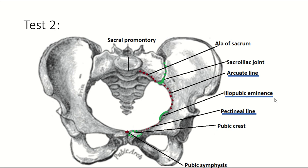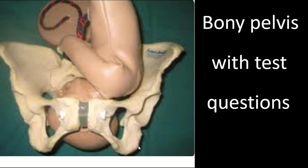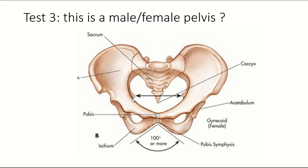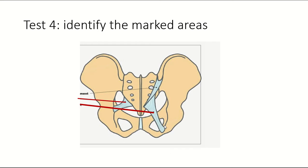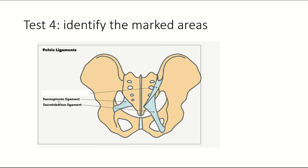Identify the marked areas: the arcuate line, iliopubic eminence, and pectineal line. In the female pelvis, note the wider subpubic angle, roomier pelvic cavity, and shorter, wider sacrum. Identify the two ligaments: the sacrospinous ligament (sacrum to ischial spine) and the sacrotuberous ligament (sacrum to ischial tuberosity).